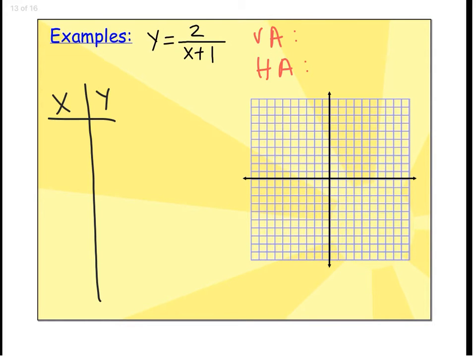Our first example: y equals 2 divided by x plus 1. First step, find our asymptotes. Vertical asymptote: I'm looking for excluded values in the bottom of my fraction, so x plus 1. The vertical asymptote would be x equals negative 1. There's nothing being added or subtracted by itself outside the fraction, so my horizontal is y equals 0. I'll sketch these in - this is my horizontal asymptote, and then my vertical asymptote.